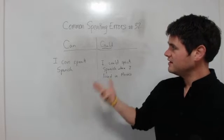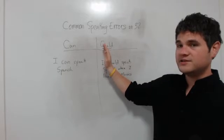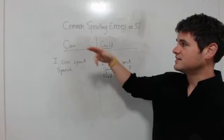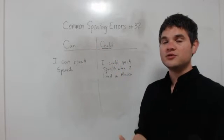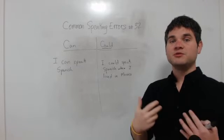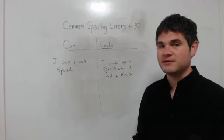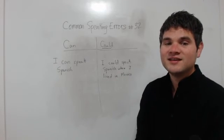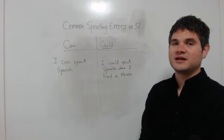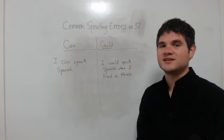So that is going to conclude this lesson. Can and could - really, could is acting as the past tense form of can, and these are modal verbs that do communicate ability to do something or the ability to do something in the past. Thank you very much for following along and I will see you in the next lesson.